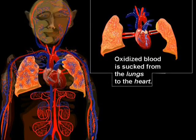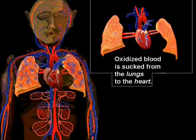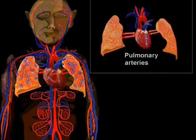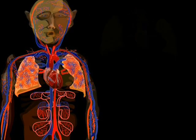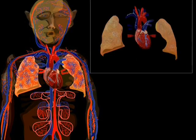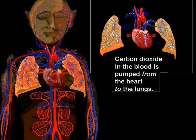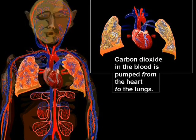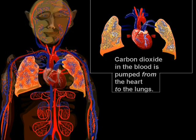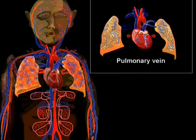Oxygenated blood is drawn from the lungs to the heart via pulmonary arteries. Carbon dioxide in the blood is pumped from the heart to the lungs via the pulmonary vein.